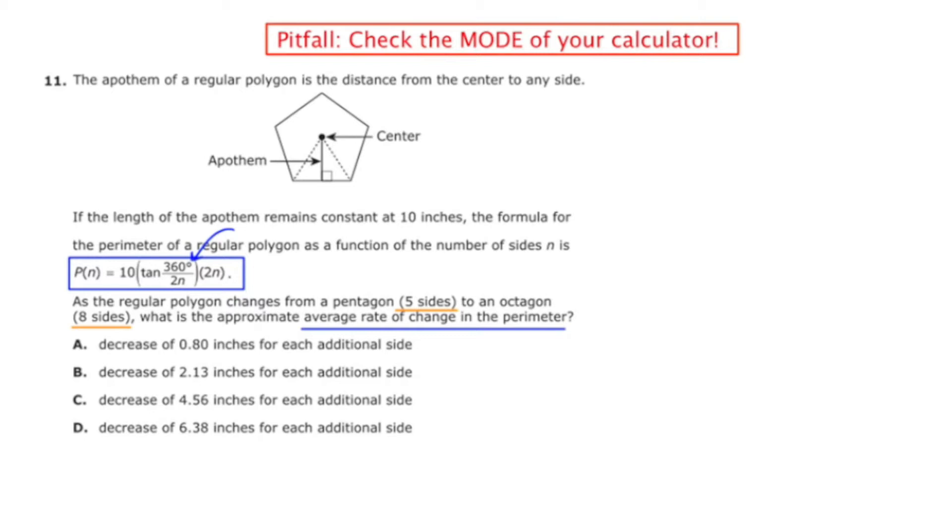We're going to need to make at least two calculations here. We have to figure out what P(5) is, the perimeter when there are 5 sides, and we also have to figure out the perimeter when there are 8 sides.